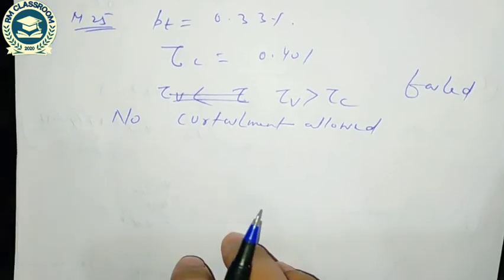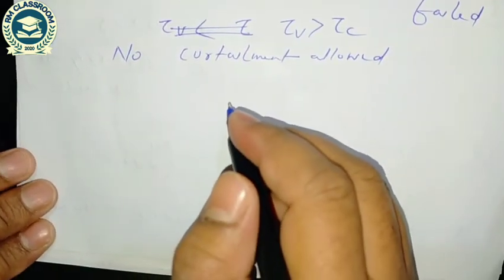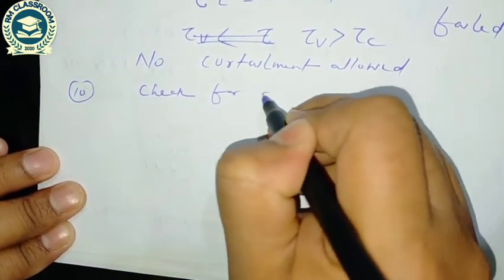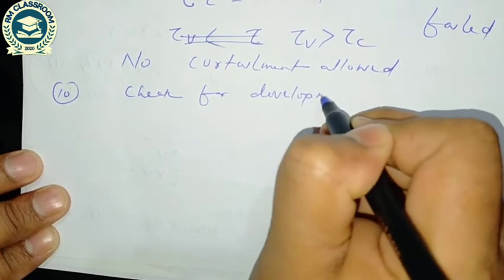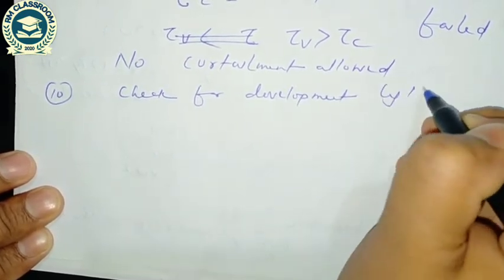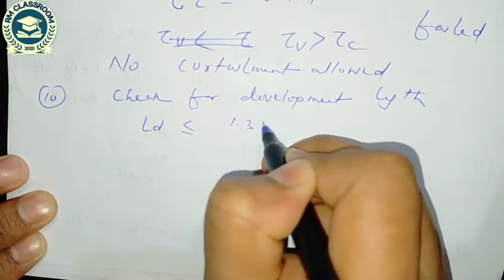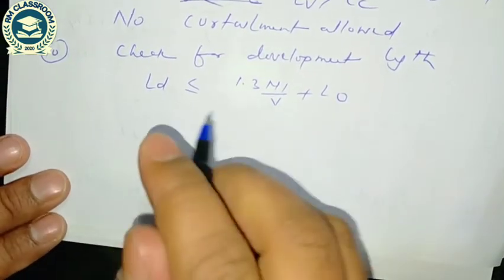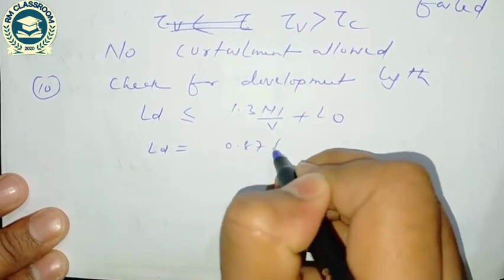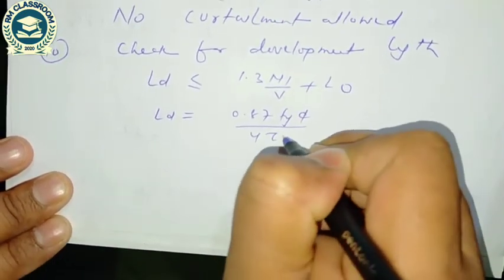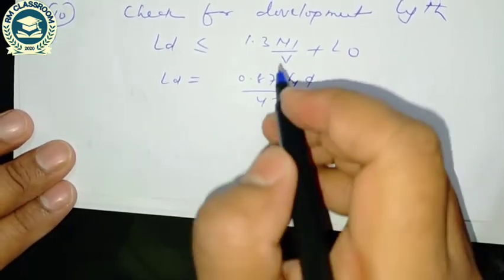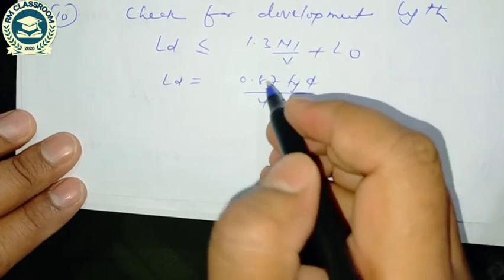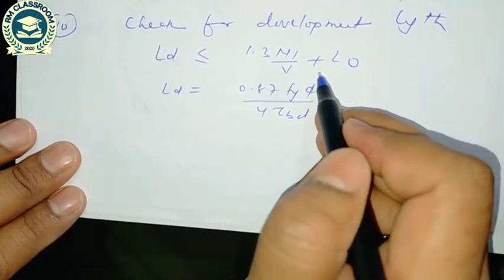Finally, check for development length: Ld ≤ 1.3·M1/V + L₀, where Ld = 0.87·fy·φ/(4·τbd). Using M1/V and L₀ values, we can verify whether the development length condition is satisfied.